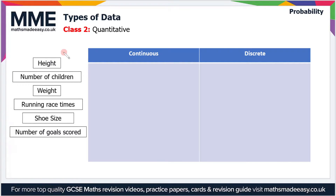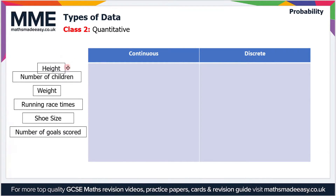Height is our first example — which category does it go into? Well, you could be any height: 150 centimeters, 200 centimeters, or even 170.99999 centimeters tall. There are no real limits, so height is continuous data.